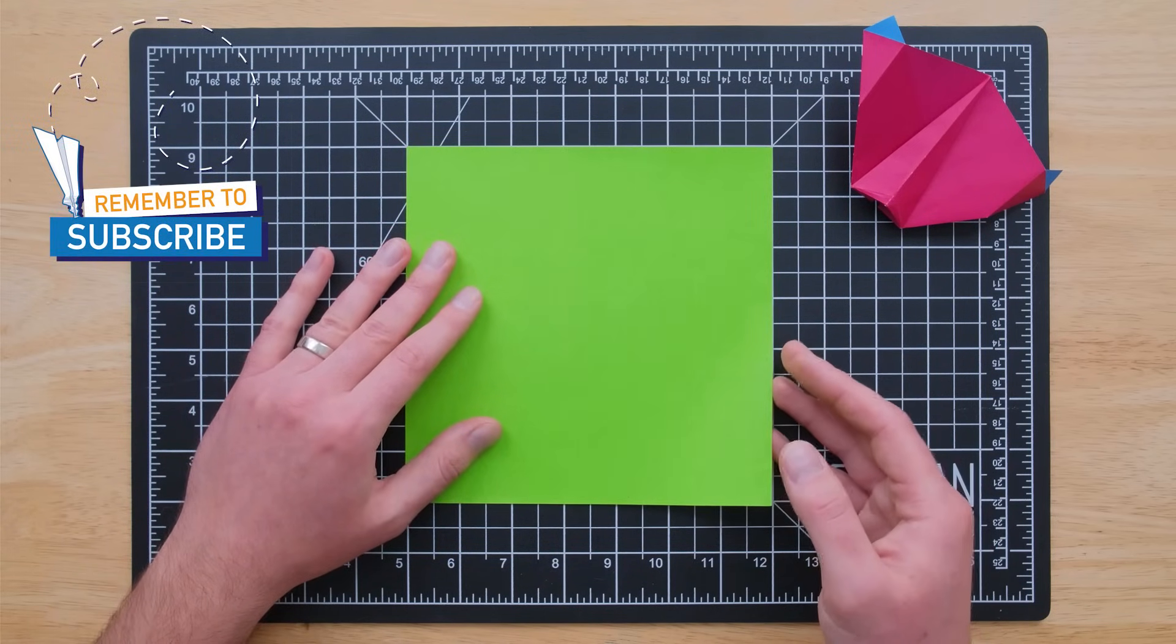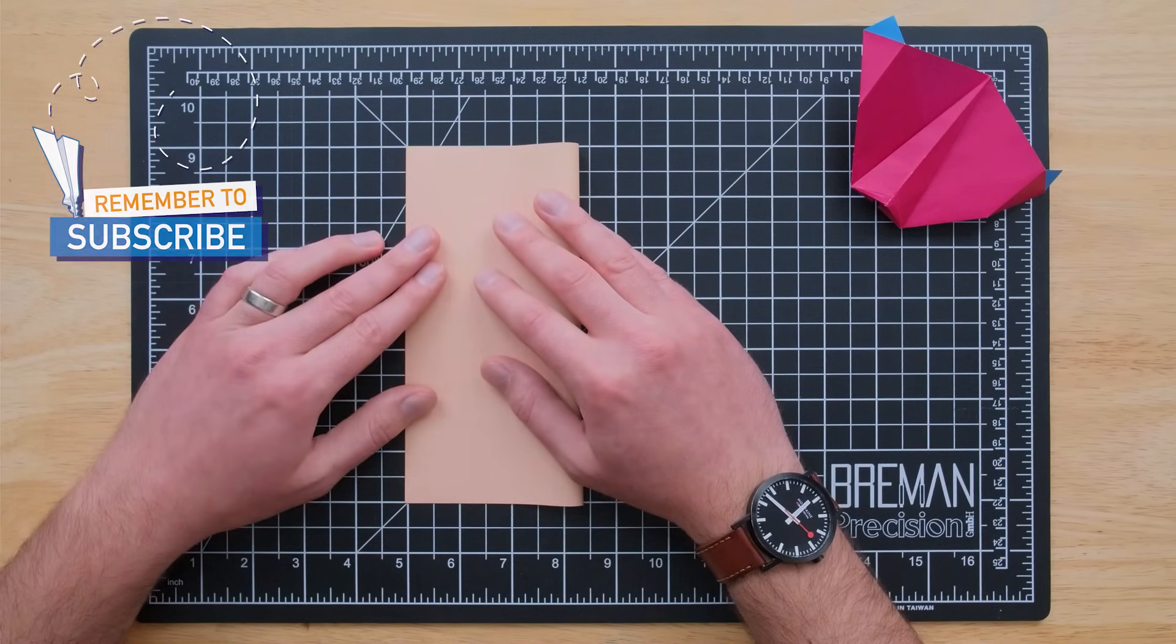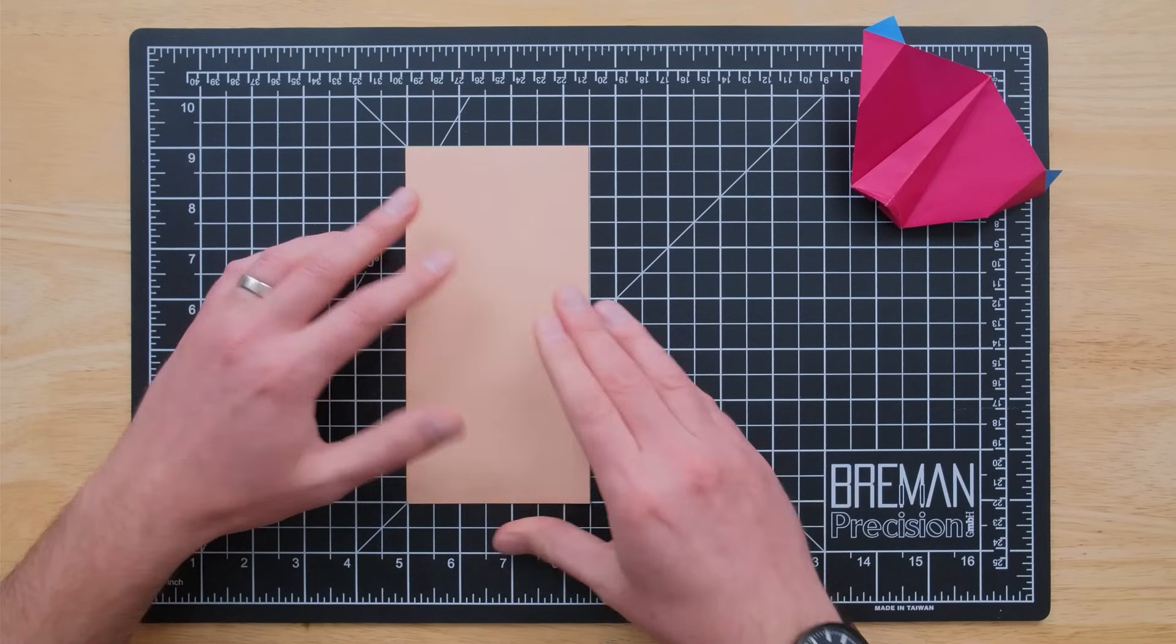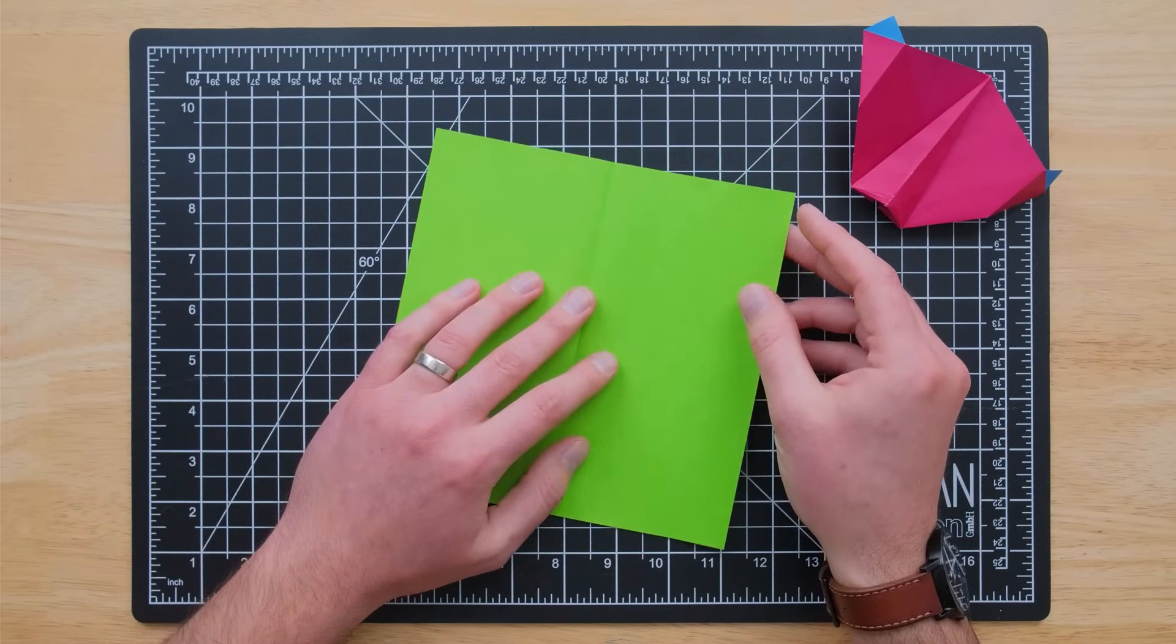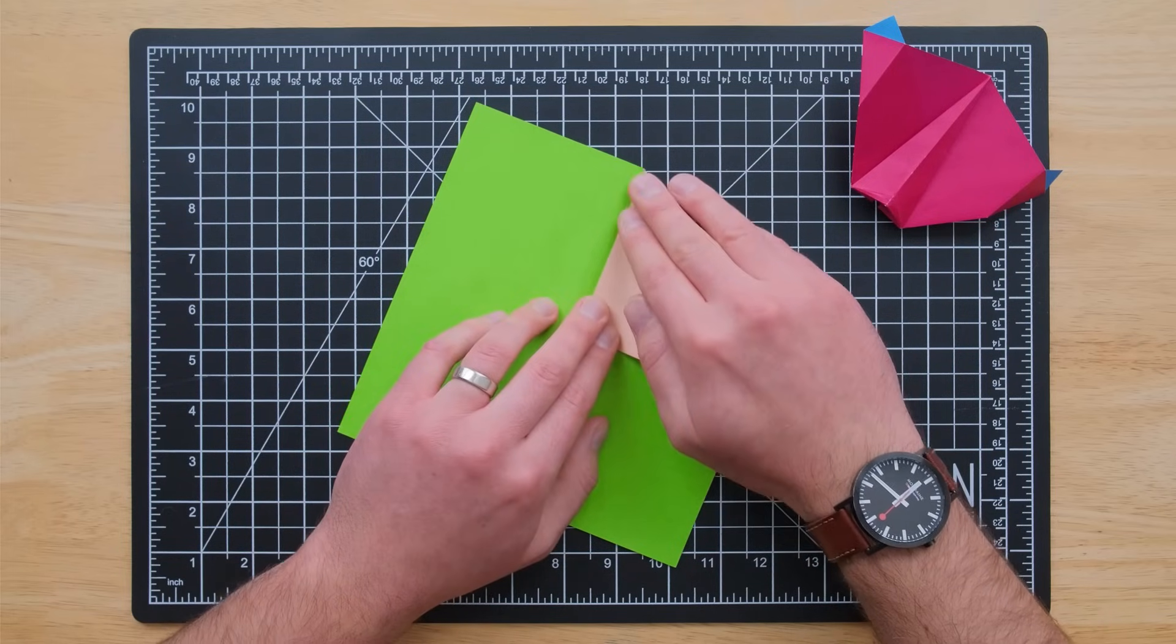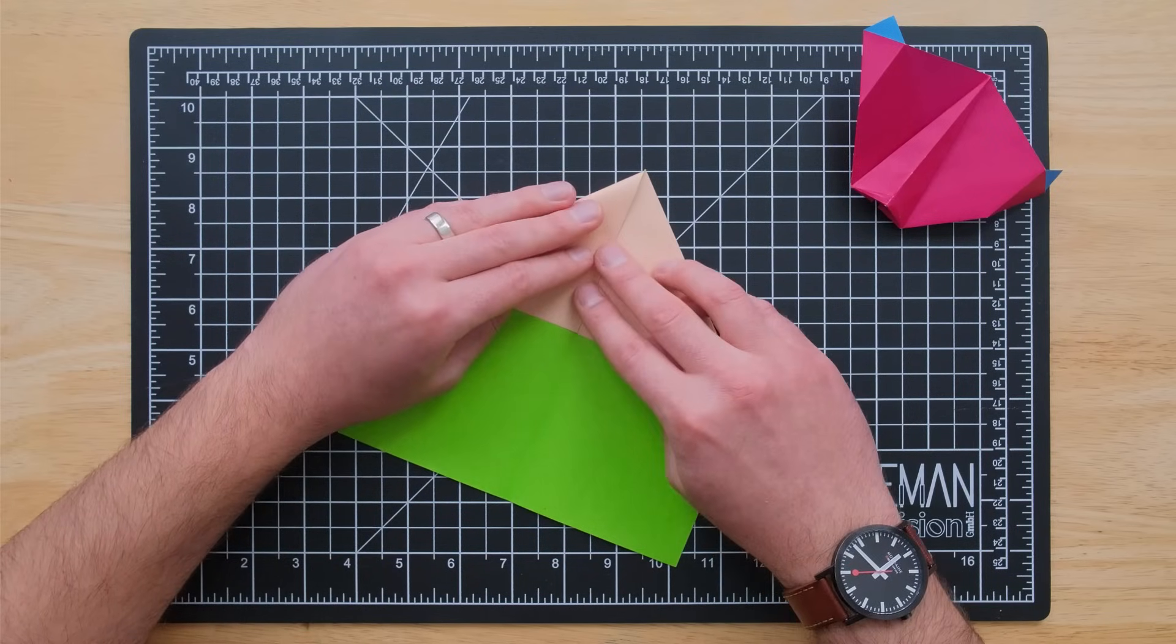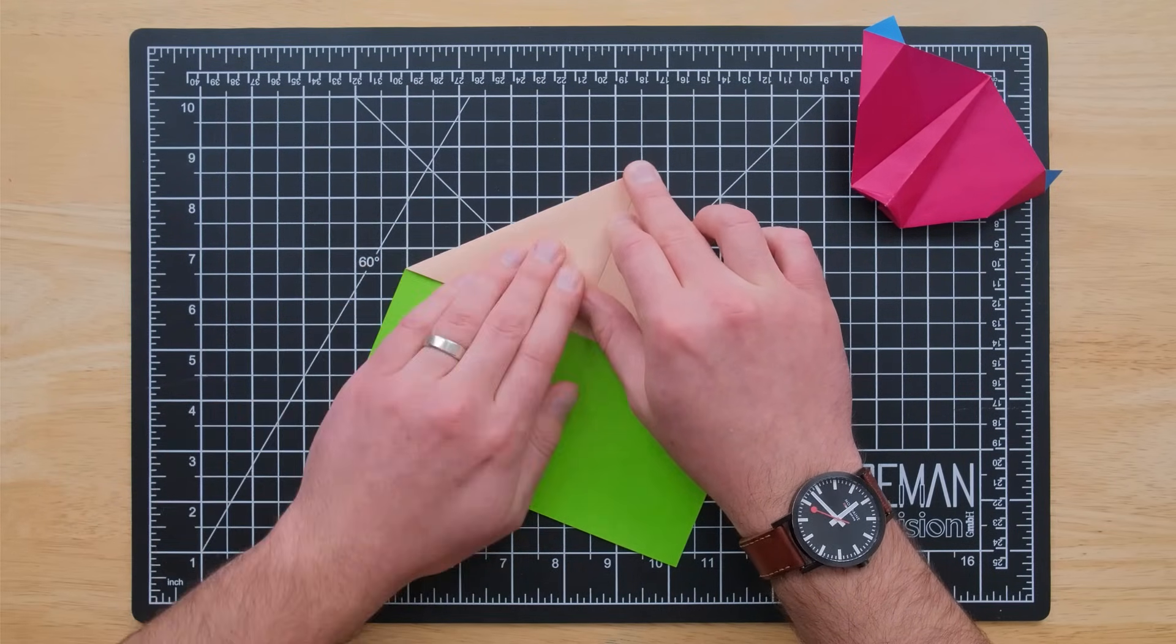All right, so the first thing we're going to do here is just fold our paper over in half right down the middle. And we're going to continue our very basic beginning to this design by folding our corners into that central line. And we're going to continue to do the same here. Fold it over to the middle, crease it down.